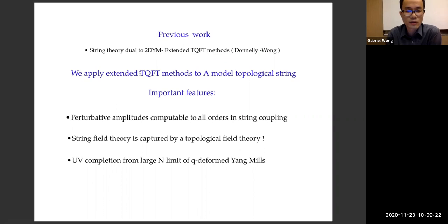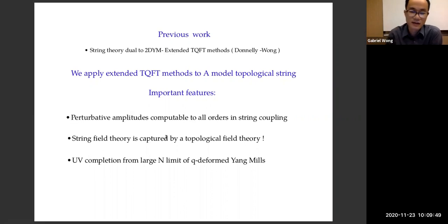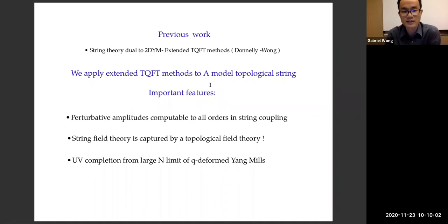Here we're going to upgrade and apply extended TQFT methods to the A-model topological string. What's useful about this model is that its perturbative amplitudes are computable to all orders in string coupling, and the string field theory itself is captured by a topological field theory — that's crucial because we understand entanglement in the second-quantized formalism better than in the first-quantized ones. This theory also has a nice UV completion in terms of large-N Yang-Mills. There were previous studies on the A-model topological string using duality by Ragamani, Roubaini, and Roger.